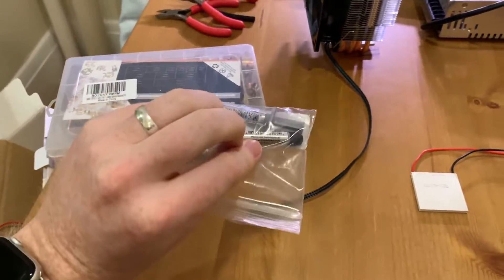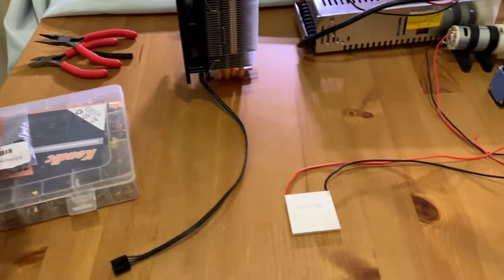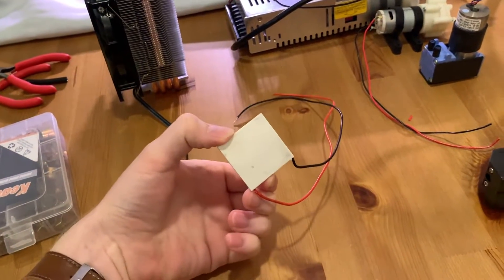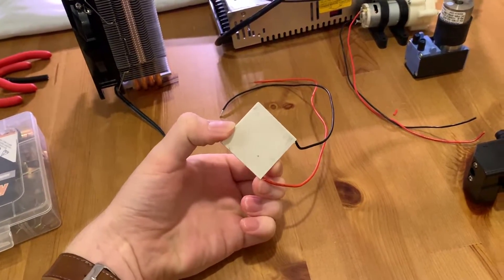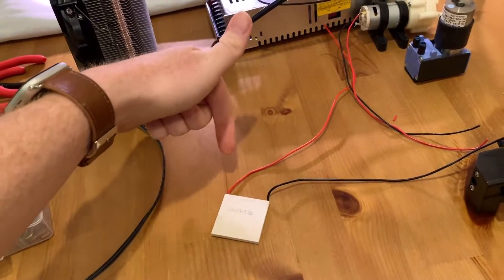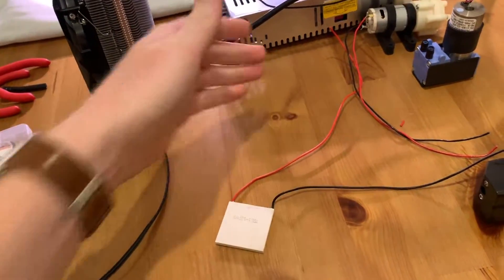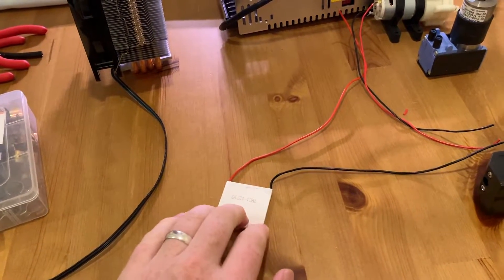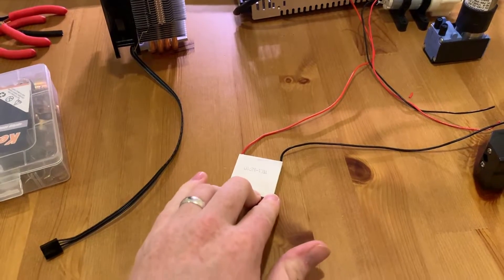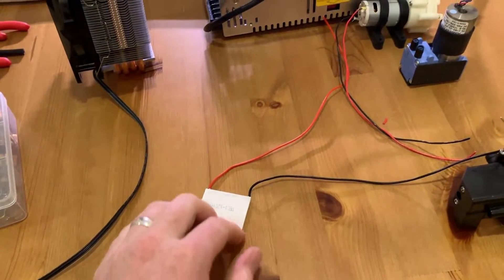You also need thermal compound to attach the two. And then on the other side of this, which I can't show right now but I'll show in the final setup, is a water block, an aluminum water block that will allow water to come in, get cold, and then come out. So that is another common device used in water chillers for CPU cooling on a computer.